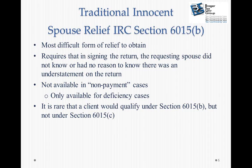It's really pretty easy to get relief under the spousal allocation rules, provided that the parties are divorced or separated and that the timing is right. We can then move on to Section 6015(b), traditional innocent spouse relief.